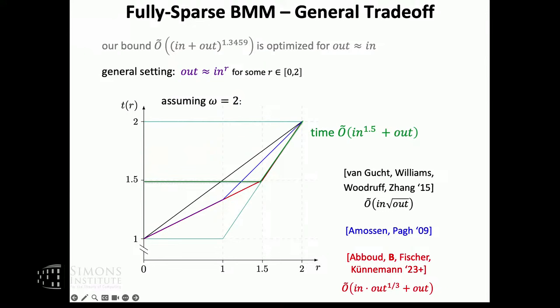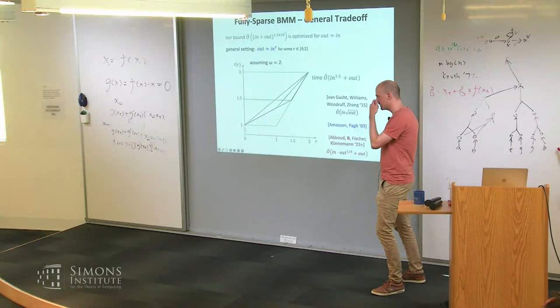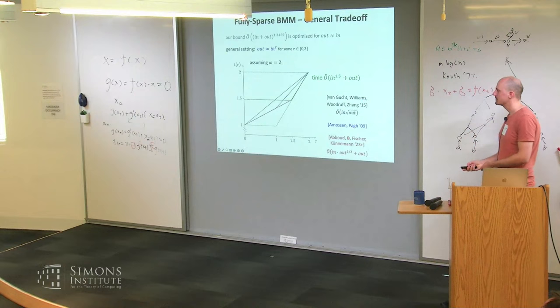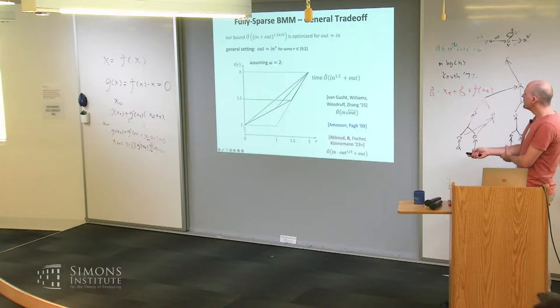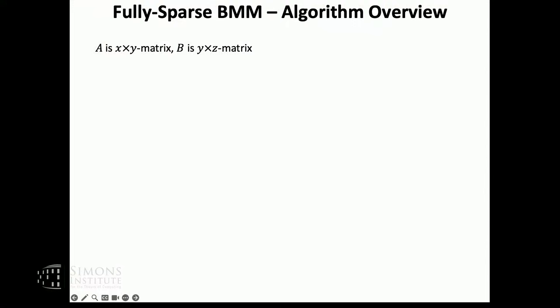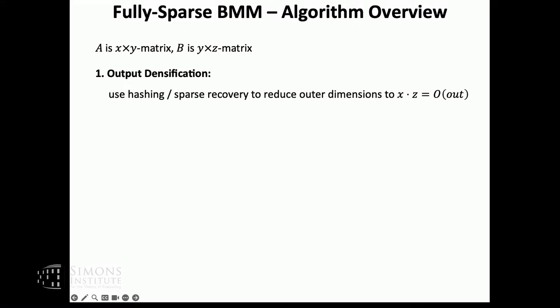Since the algorithm is linear in the output size, one might ask whether you can also enumerate with small delay — we discussed this but don't see how to do it, though it would be very interesting. The algorithm does not need to know the output size in advance. Here's a coarse overview of what the algorithm does. Suppose matrix A has dimensions X by Y and B has dimensions Y by Z. The first step is to densify the output using hashing tricks — some people call this sparse recovery — to reduce the outer dimensions so that their product becomes linear in the output size.